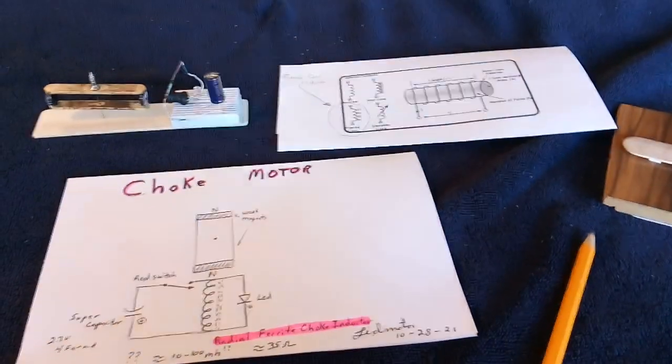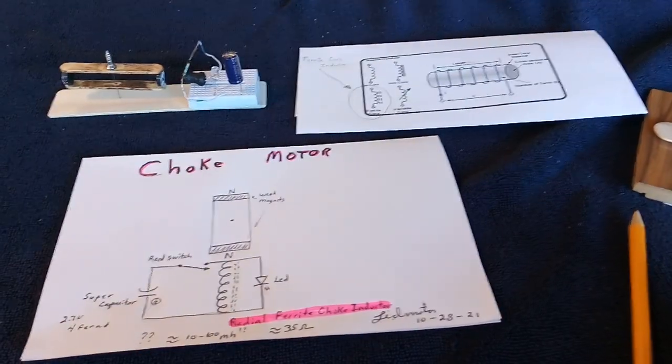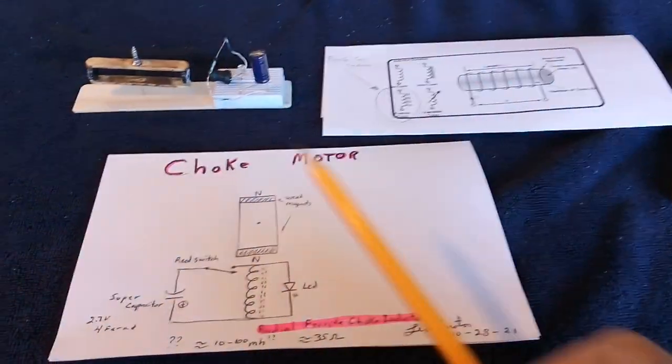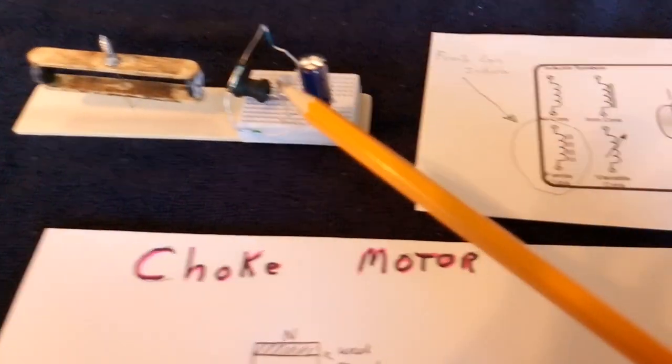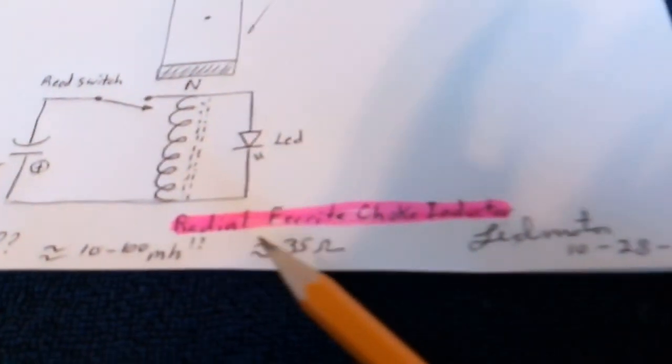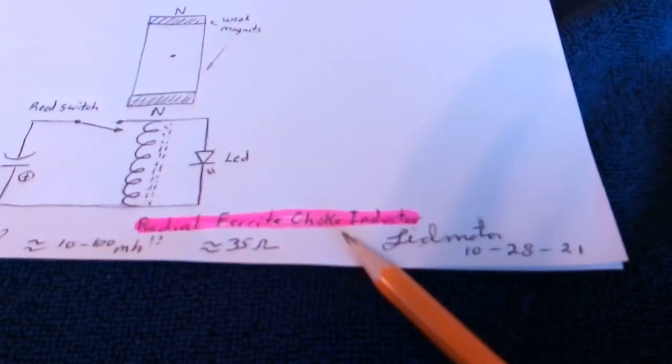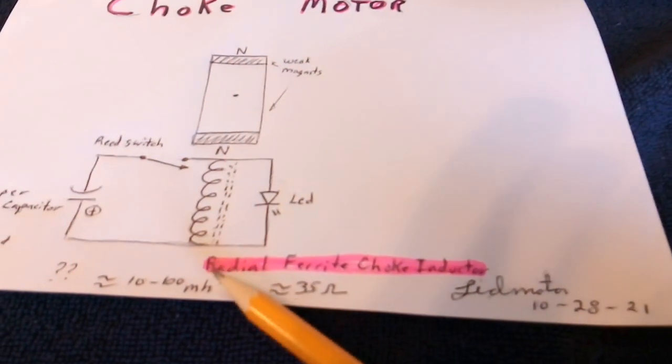I'm working on something a little different that I've worked on before, but I'm revisiting it. I'm playing around with an electronic component called a radial ferrite choke inductor. The electronic symbol is right there.